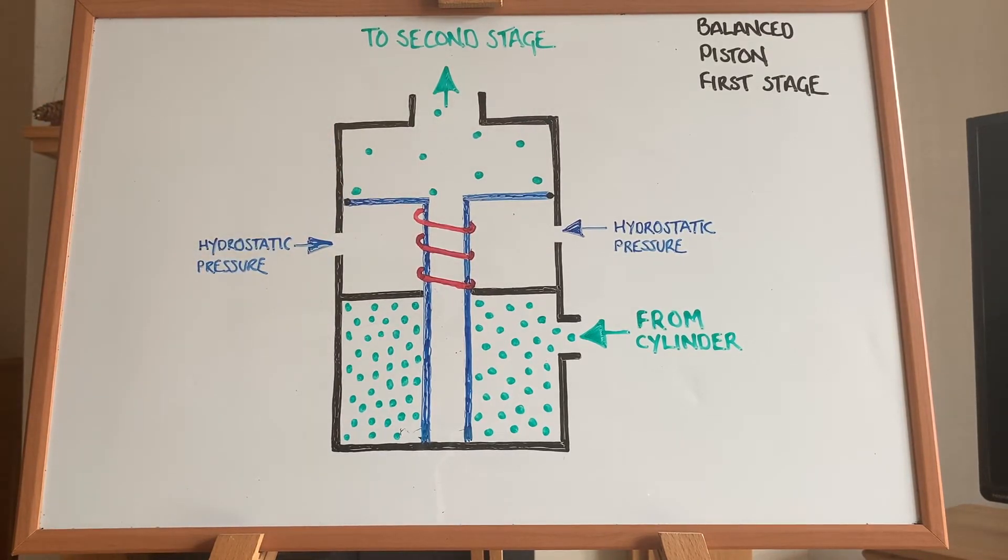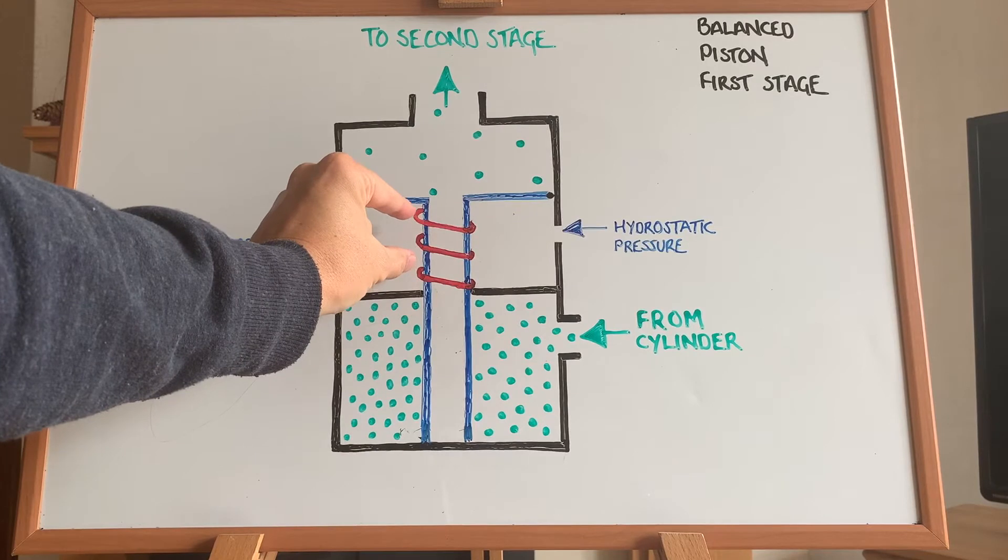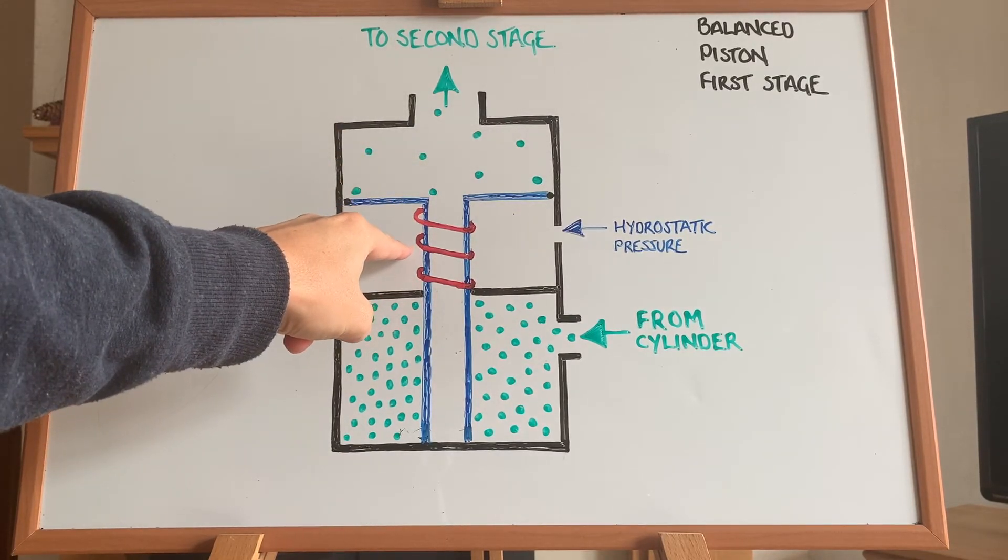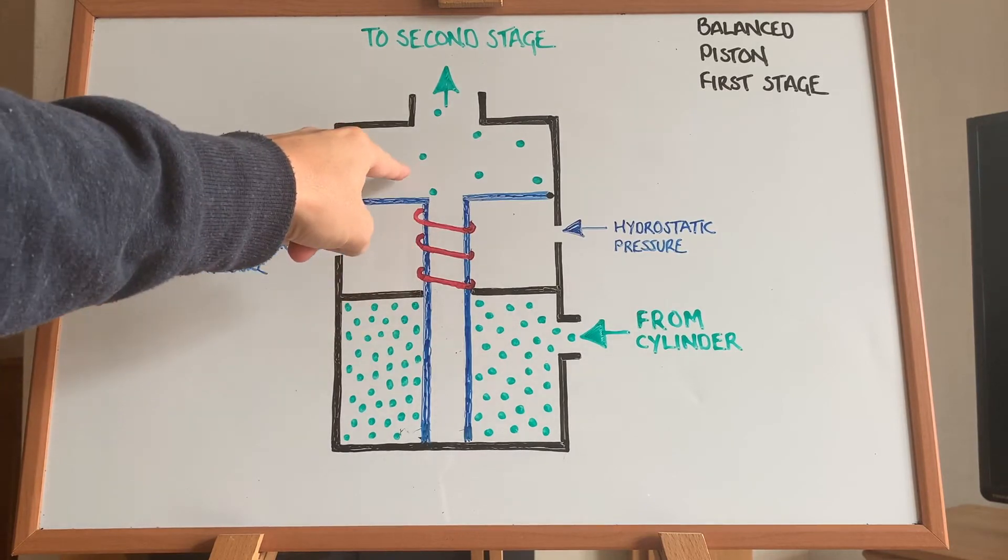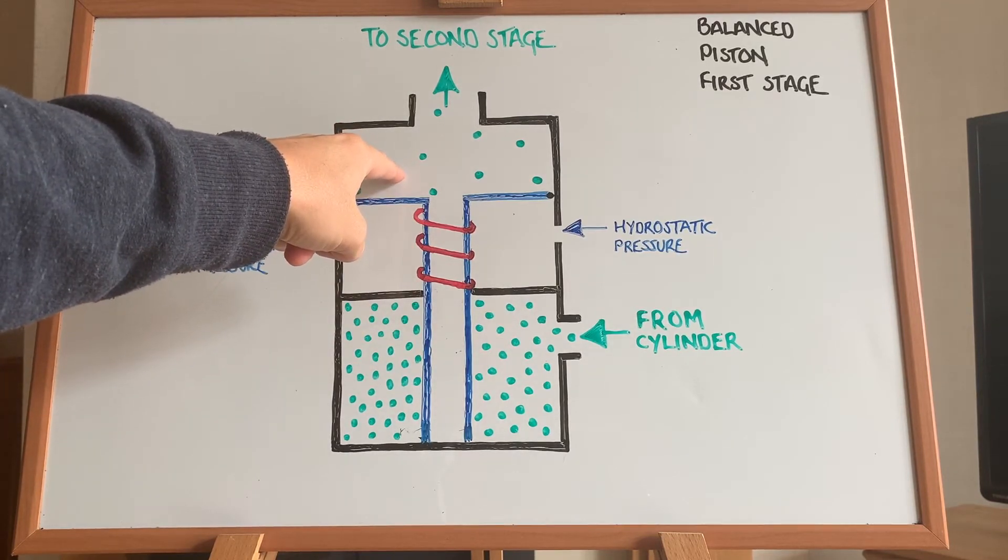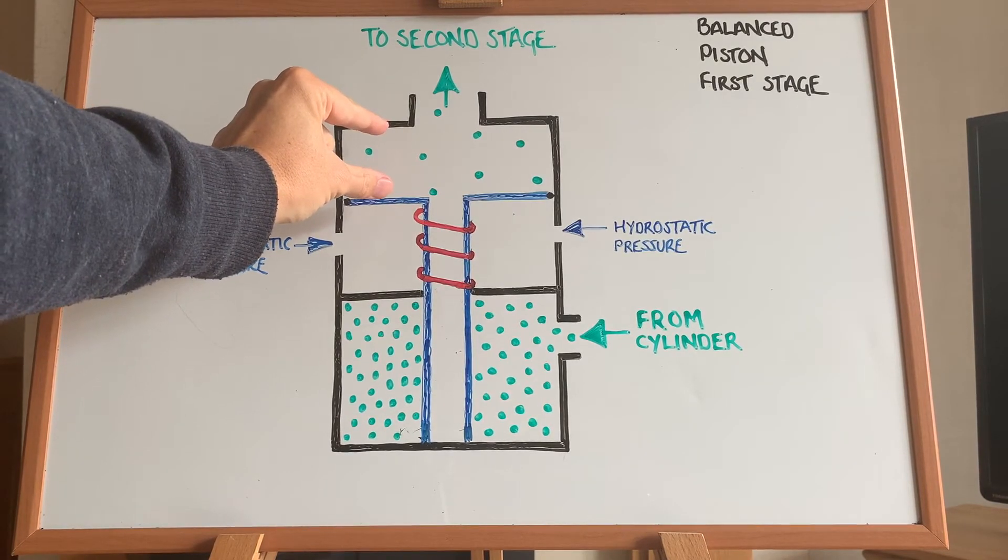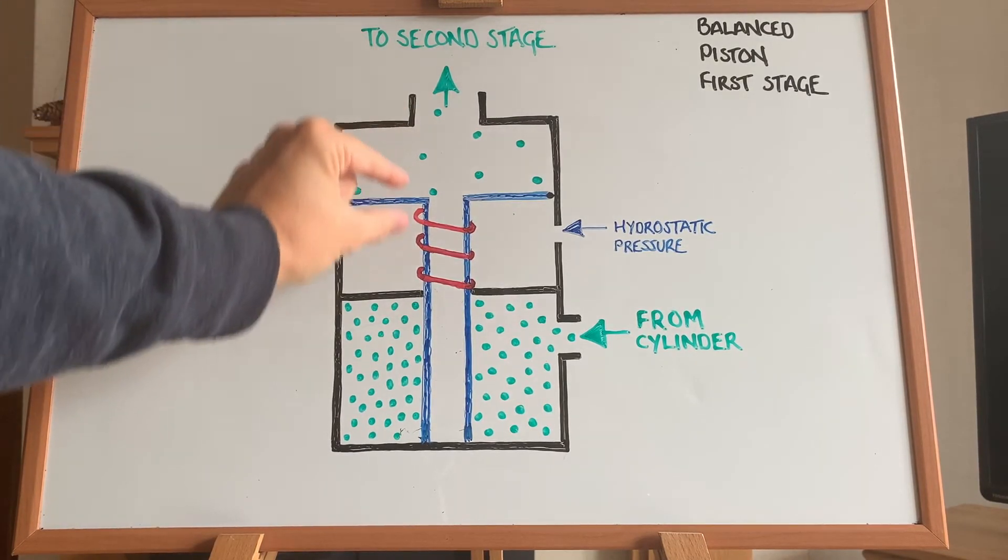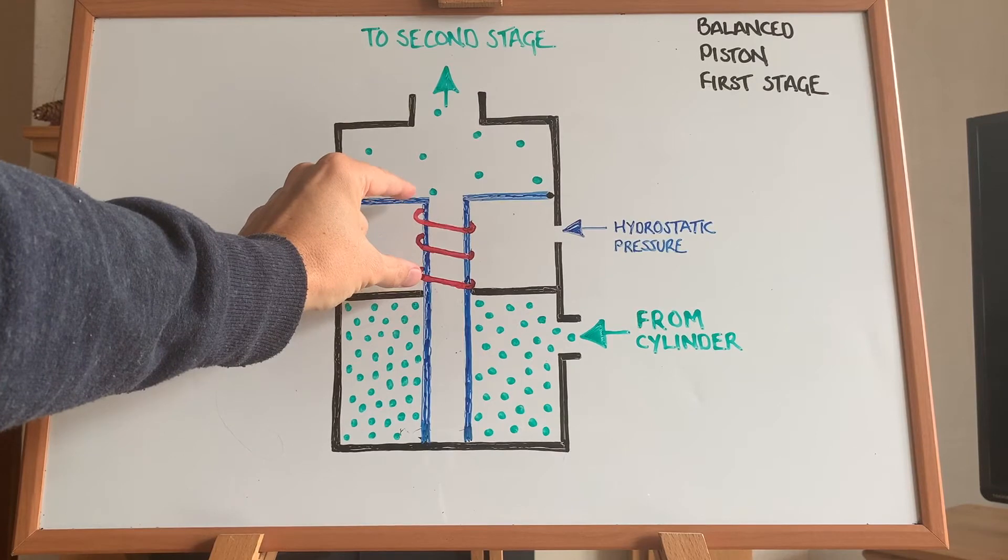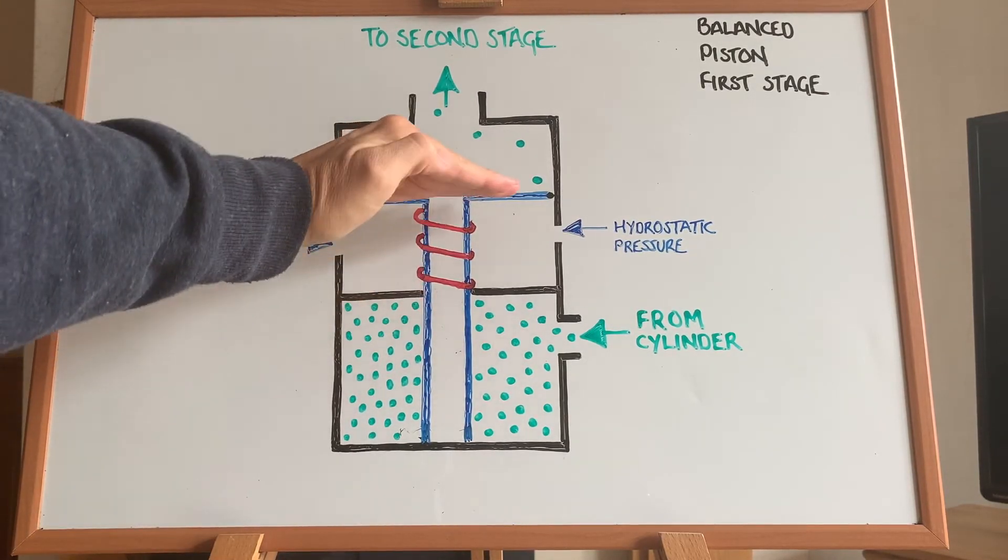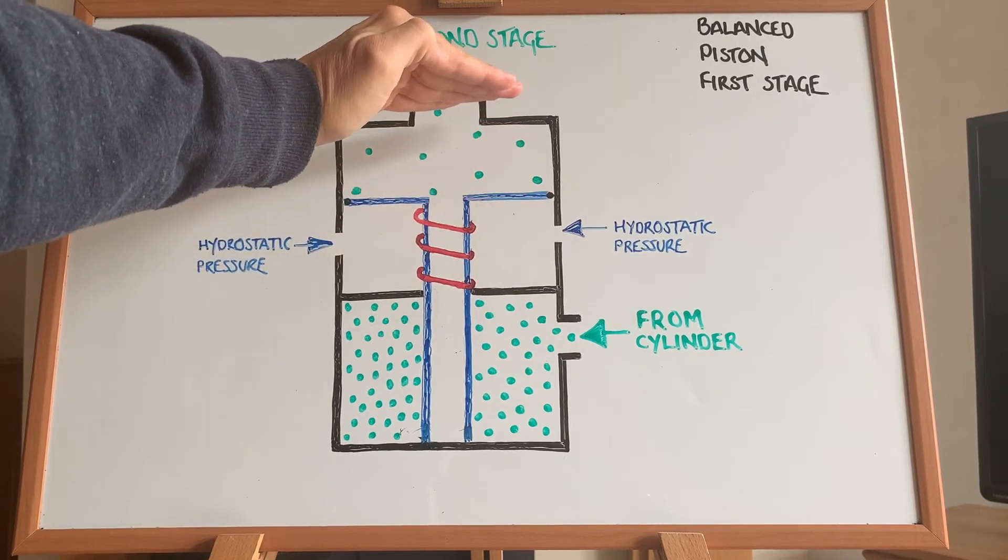Now, what that in turn allows is it allows this spring to sort of uncoil itself a little bit, because the tension of this spring is set to around the same pressure as the intermediate pressure port. So when the gas pressure in here drops, this spring can then start to uncoil itself a little bit, which means as it uncoils, it starts to push the piston up.